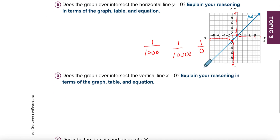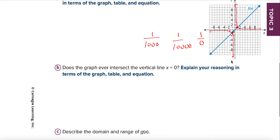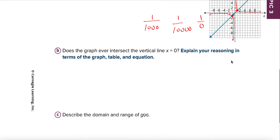Is it ever going to approach the vertical line? Nope. The same thing is happening — when we get closer to x equals zero, the values skyrocket. As I get close they skyrocket, but I cannot put x equals zero in there, so I'll never have the value x equals zero.